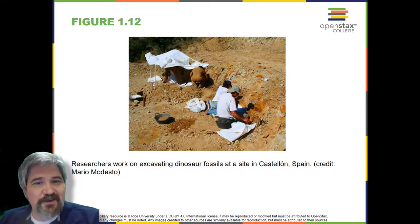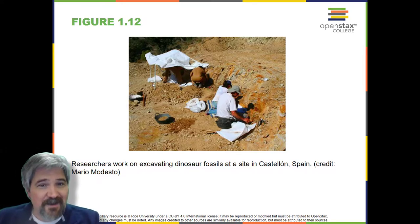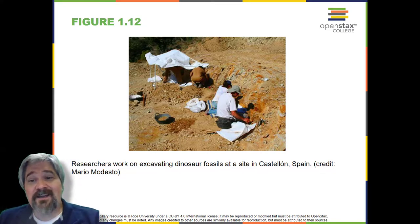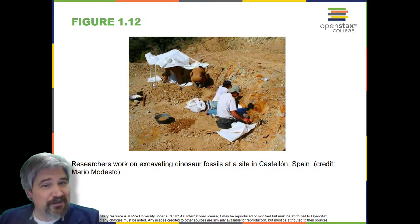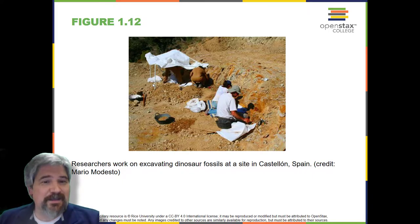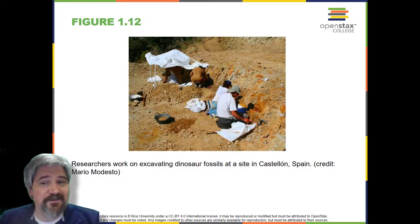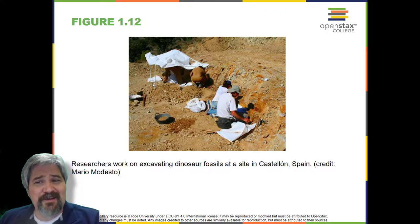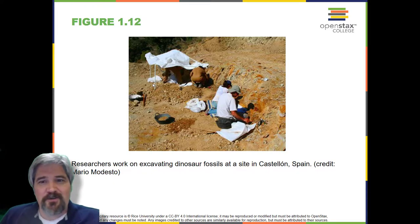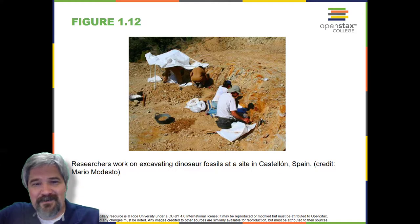Branches of biological study: the scope of biology is broad and therefore contains many branches and sub-disciplines. Biologists may pursue those sub-disciplines and work in a more focused field. For instance, molecular biology studies biological processes at the molecular level, including interactions among molecules such as DNA, RNA, and proteins, as well as the way they are regulated. Microbiology is the study of the structure and function of microorganisms — it is quite broad itself, and depending on the subject of study, there are microbial physiologists, ecologists, and geneticists, among others. You're not going to get away from molecular biology in microbiology — that's going to be part of your work.